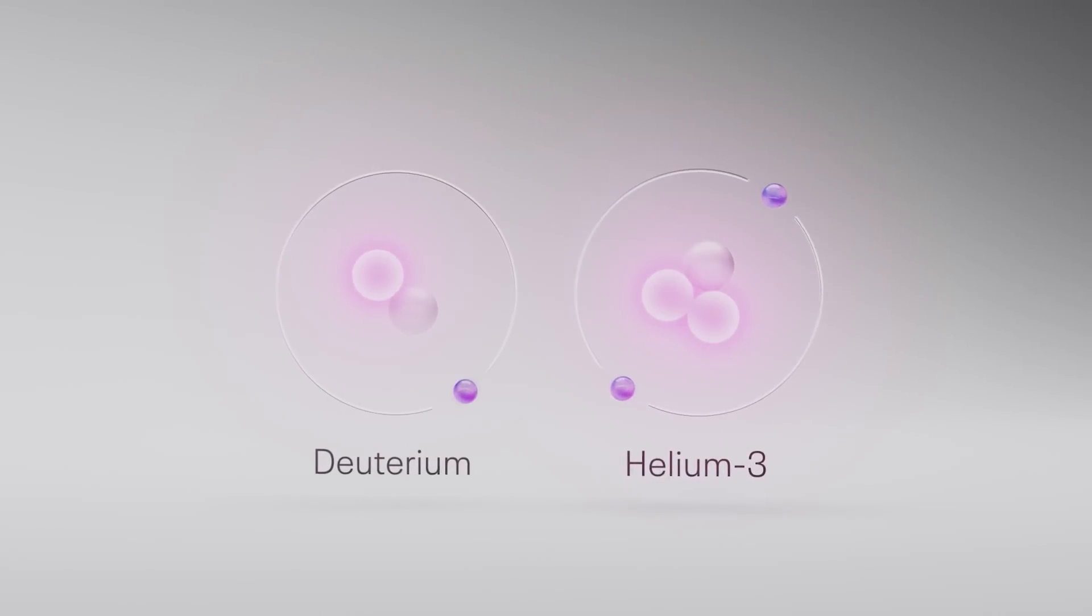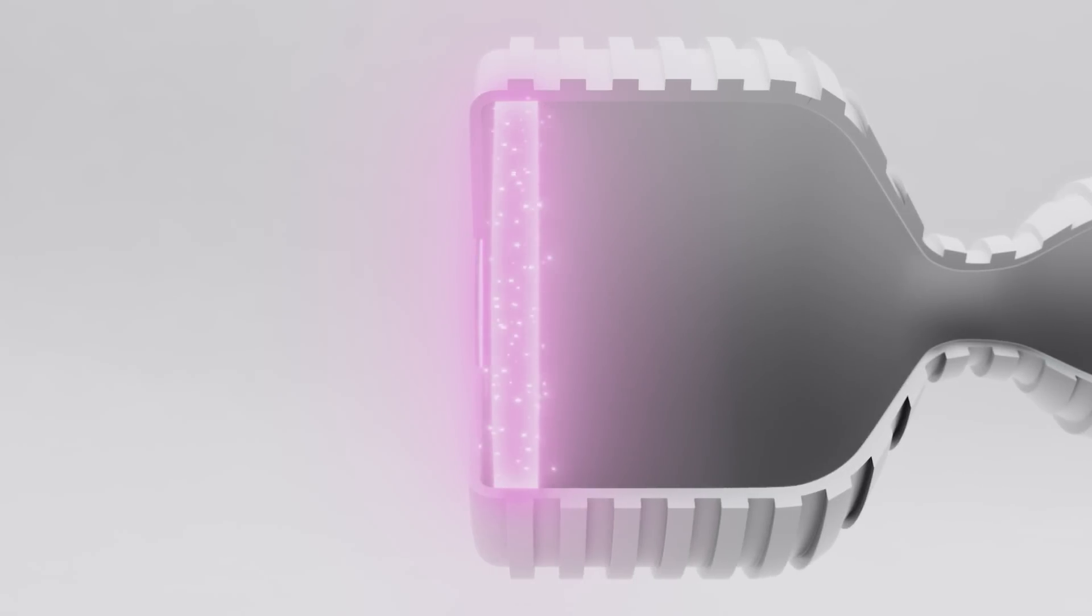It starts with Helion's fusion fuel, deuterium and helium-3. These fuels are injected as a gas into Helion's formation chamber where they are superheated into an ionized gas called a plasma.